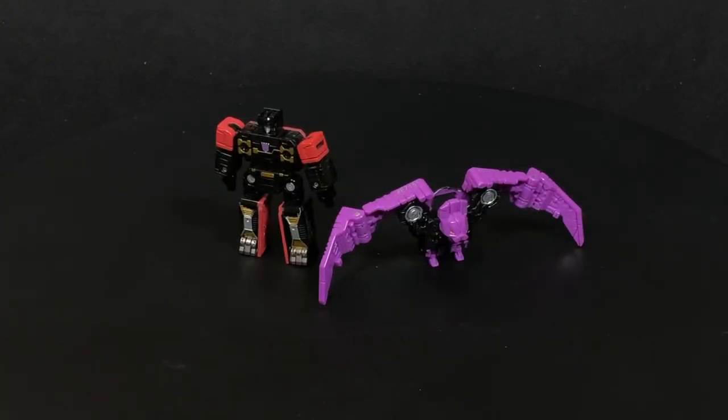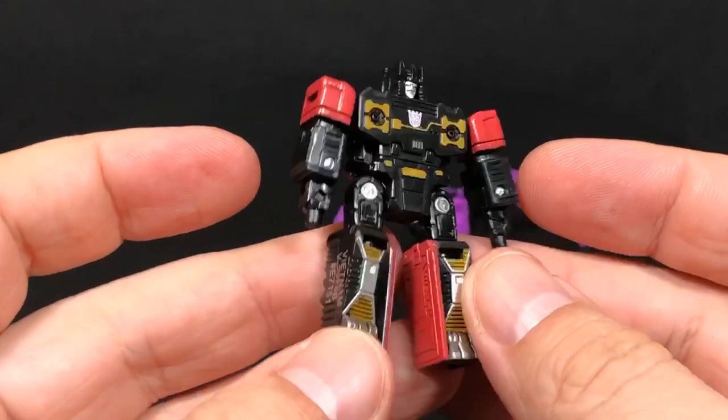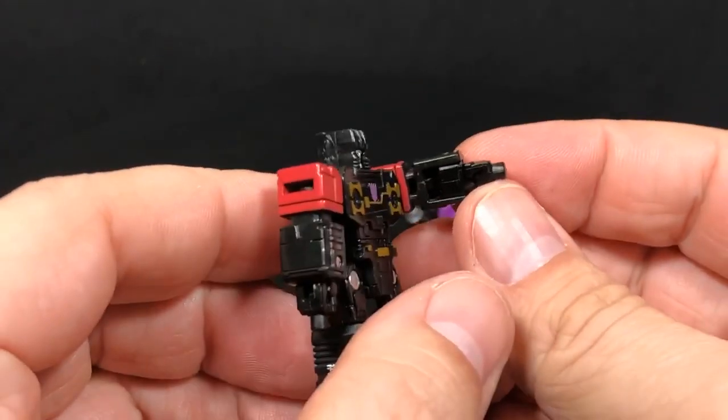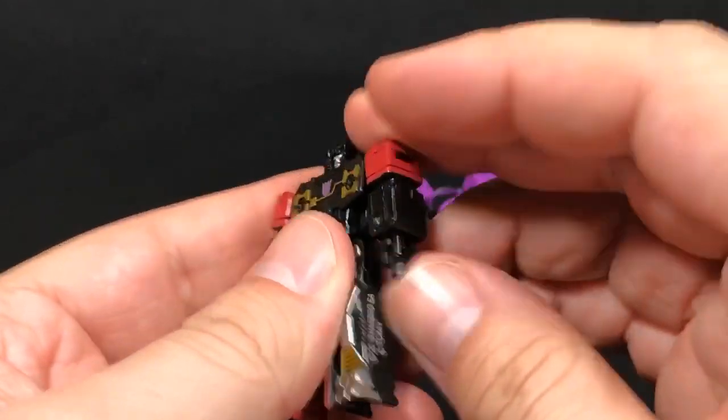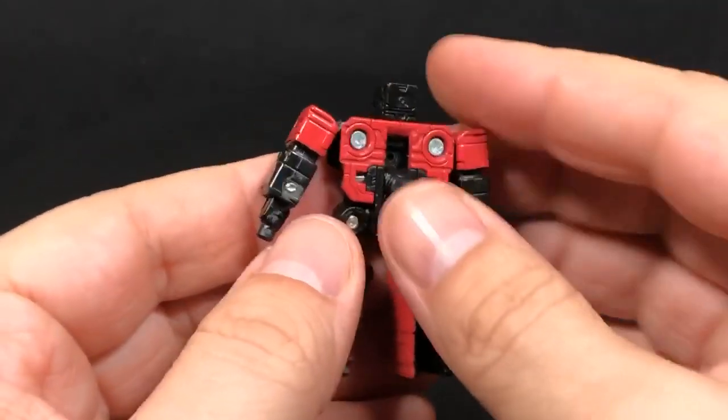You can see Rumble here, he is very humanoid. He does have these tabs on his fist so that you can plug in the weapon blast and such. I have that tab flipped down - that's part of the tab that connects.